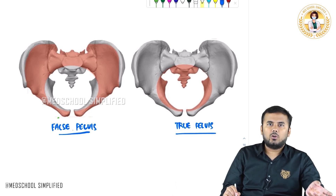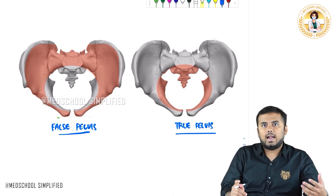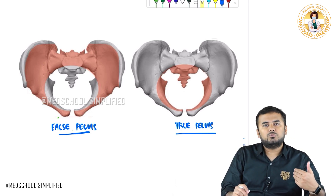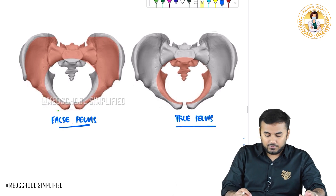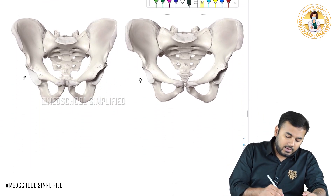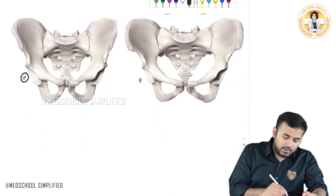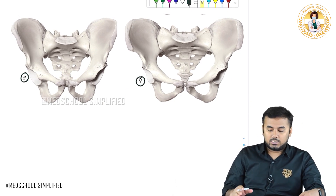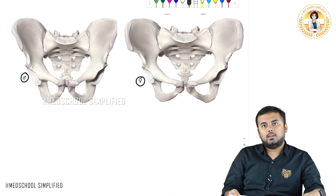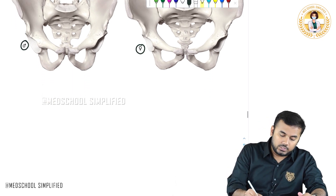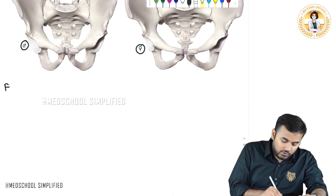Along with that, we shall add some other features. What is the basic difference between the male pelvis and the female pelvis? This is the male pelvis and this is the female pelvis. We shall discuss the structures that are different. First, let us look at the false pelvis.